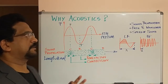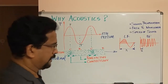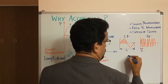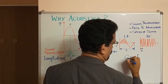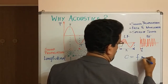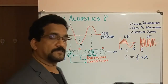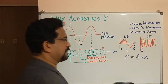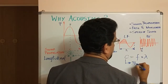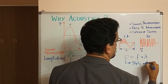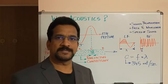Coming to the frequency and wavelength relation and how it relates to sound — in the previous session we studied the wavelength and frequency relation with the speed of sound. The speed of sound is 344 meters per second, but an easier number to remember is 345 meters per second.